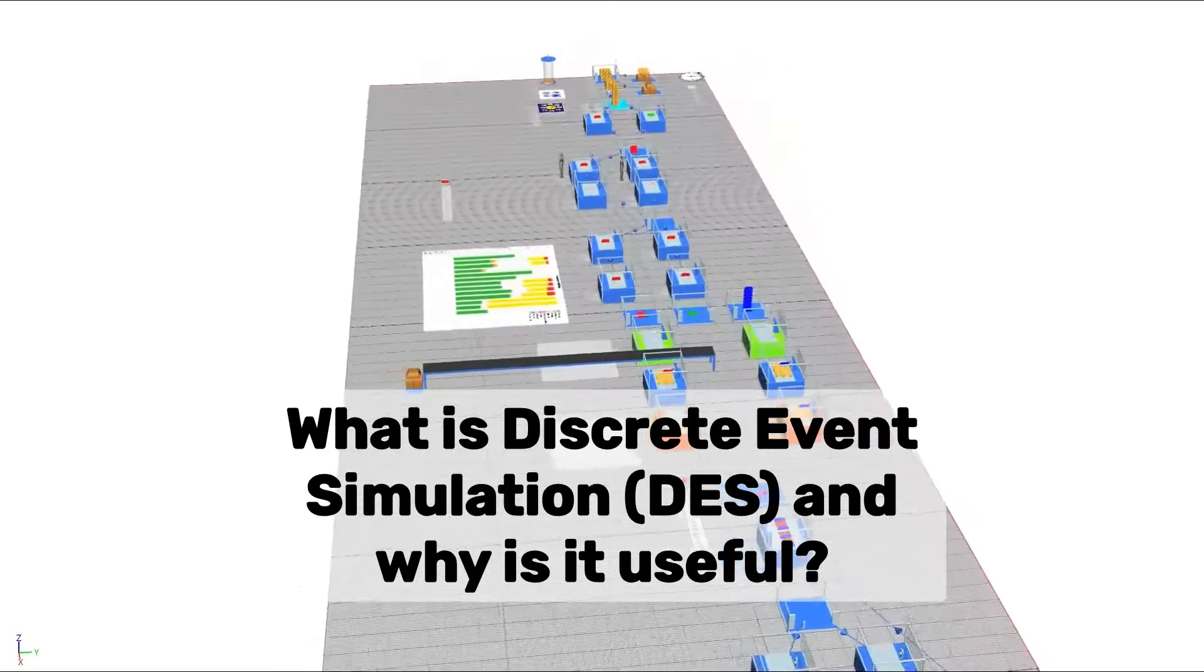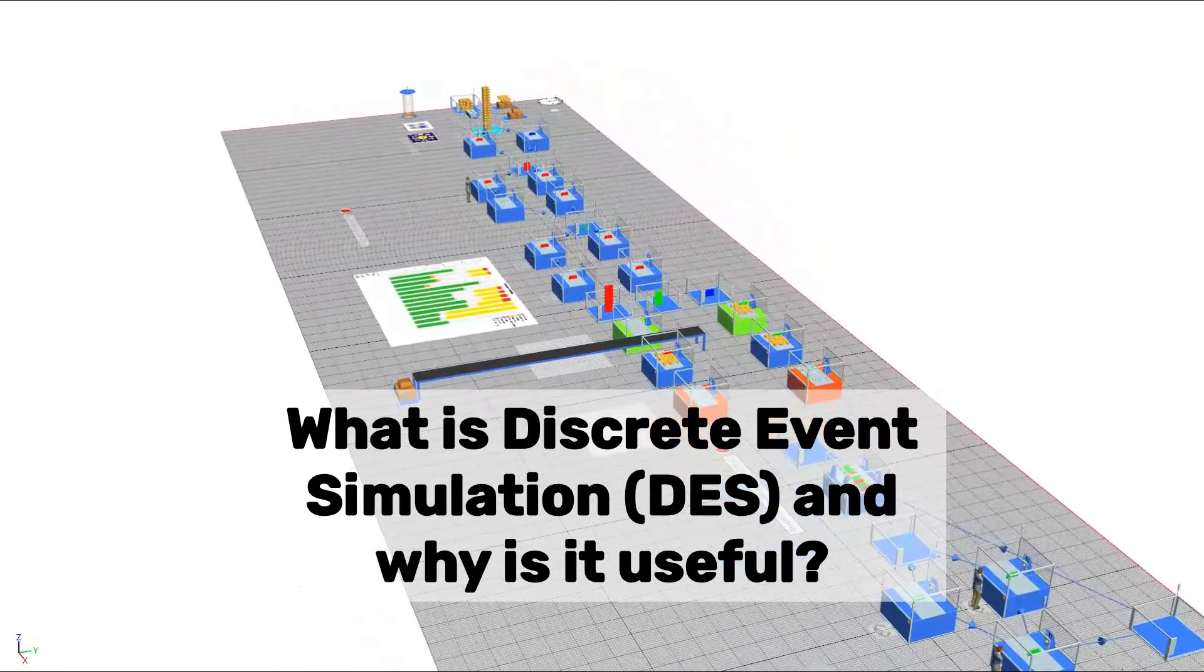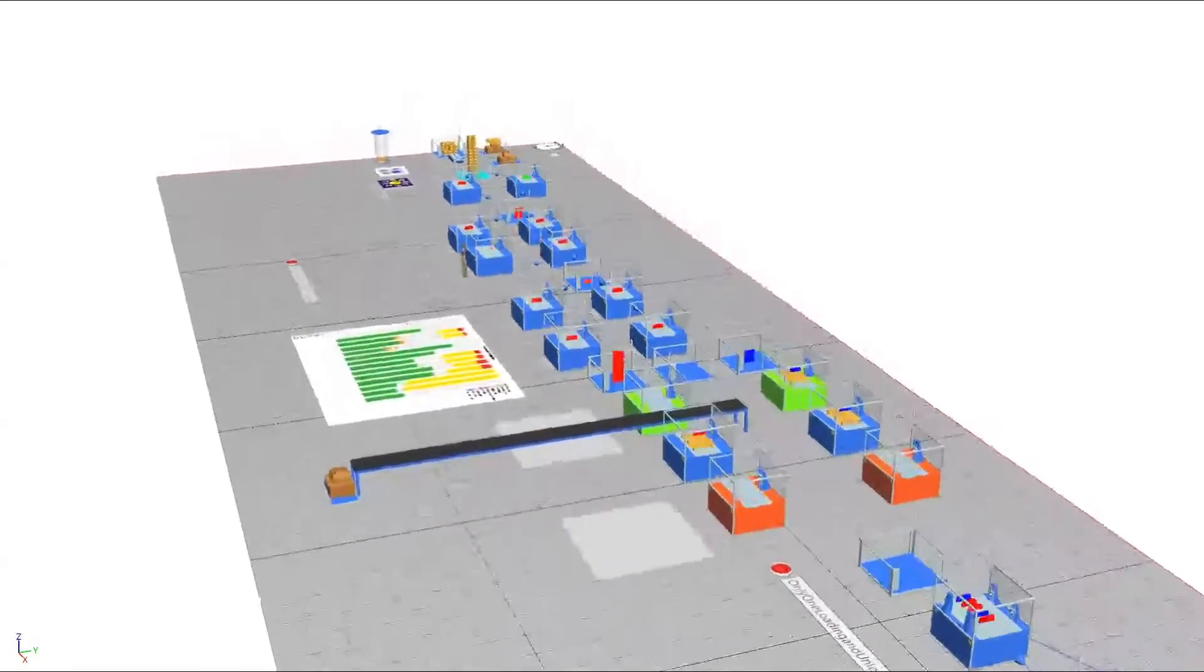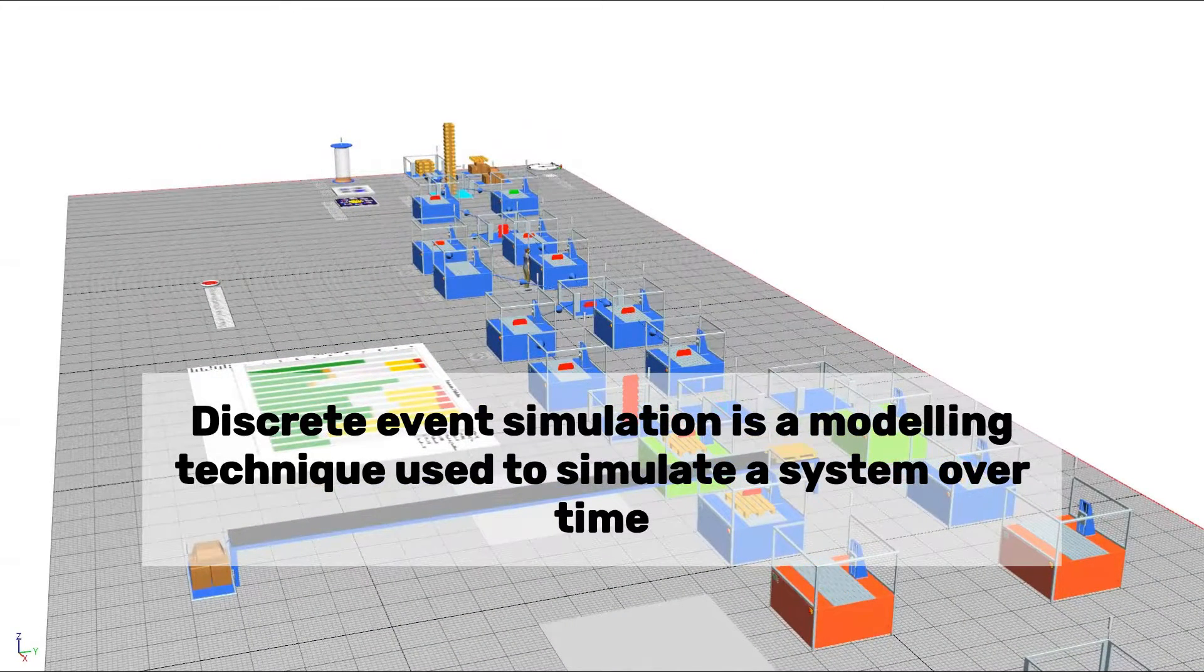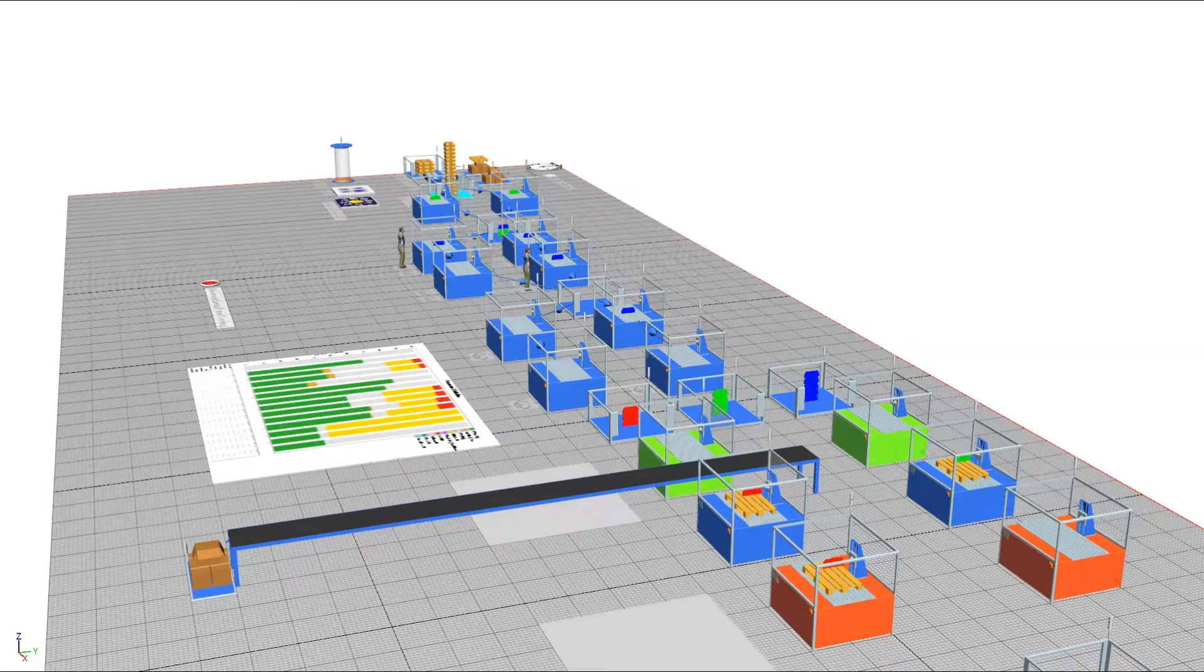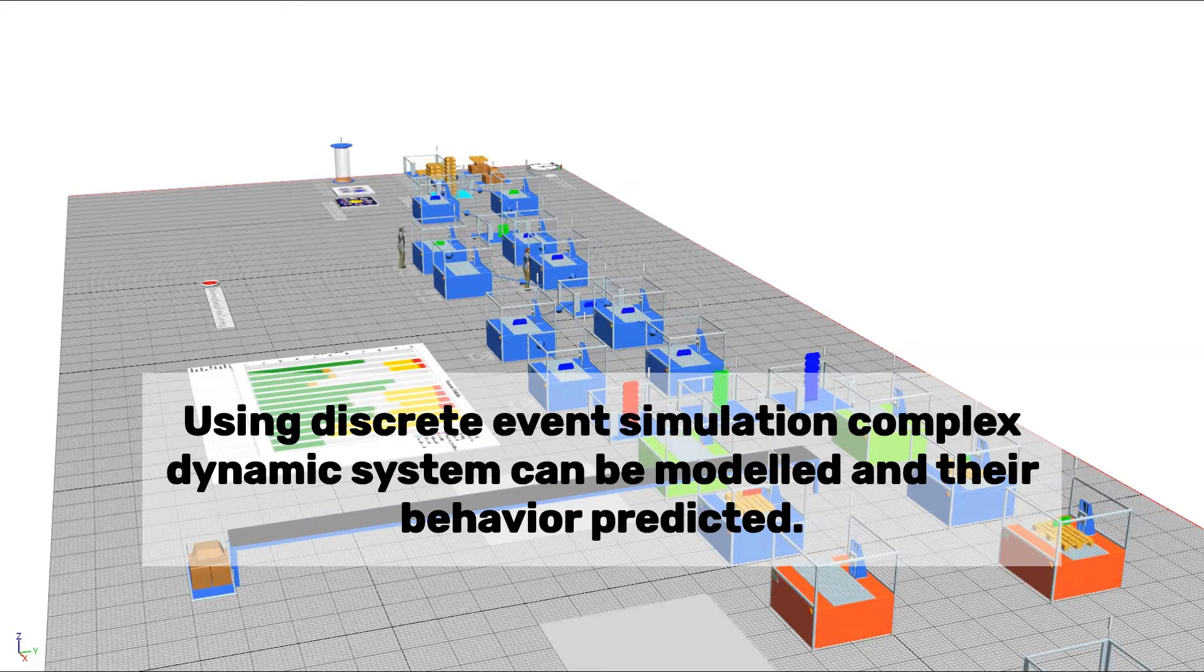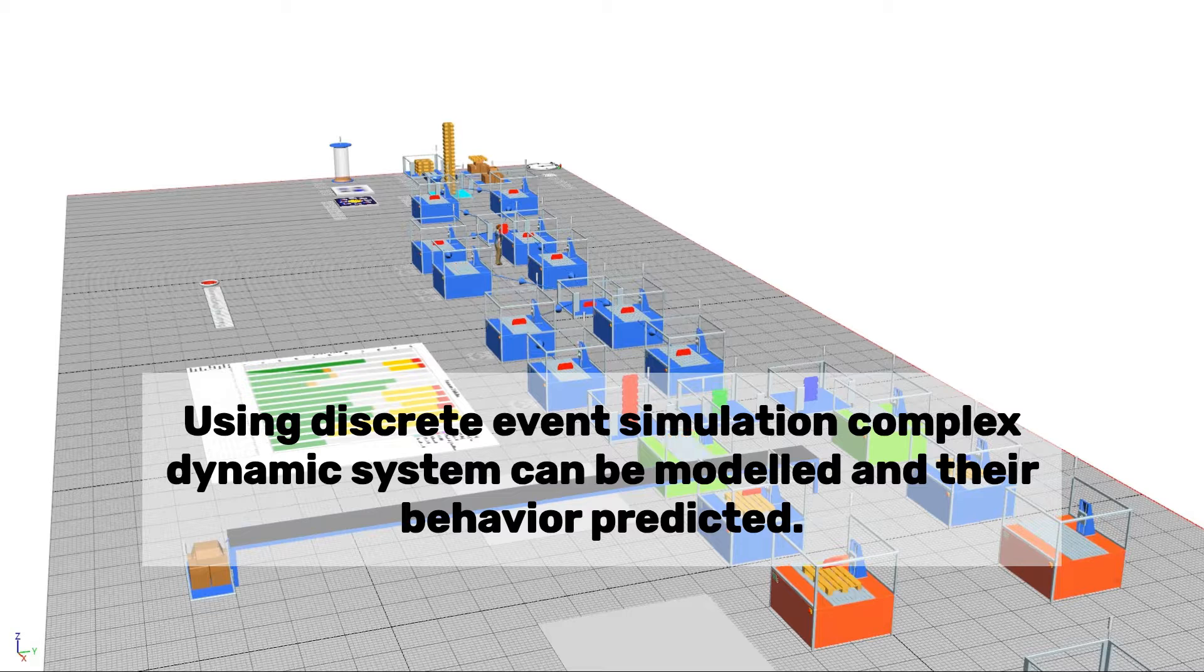What is discrete event simulation and why is it useful? Discrete event simulation is a modeling technique used to simulate a system over time. Using discrete event simulation, complex dynamic systems can be modeled and their behavior predicted.